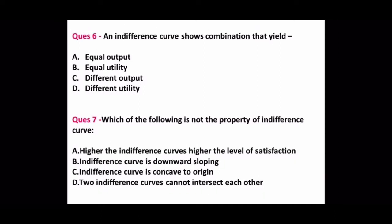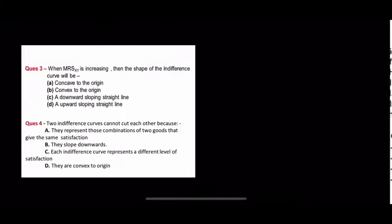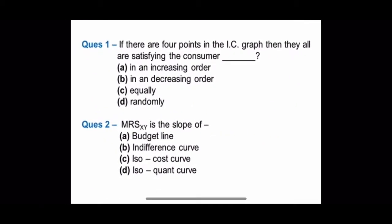Now all the questions end. I hope you have written your answers. Let's discuss. Question 1: If there are 4 points in the IC graph then they all are satisfying the consumer in an increasing order, decreasing order, equally or randomly. In the previous video when we started reading indifference curve, indifference means same, equal. IC curve gives equal satisfaction, so if you have 4 points or 40 points then they will give you equal satisfaction. So the answer here is C.